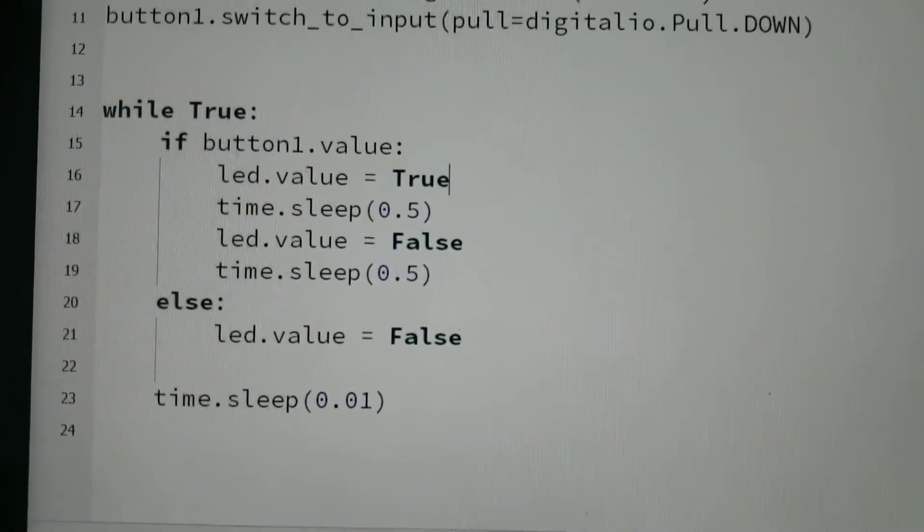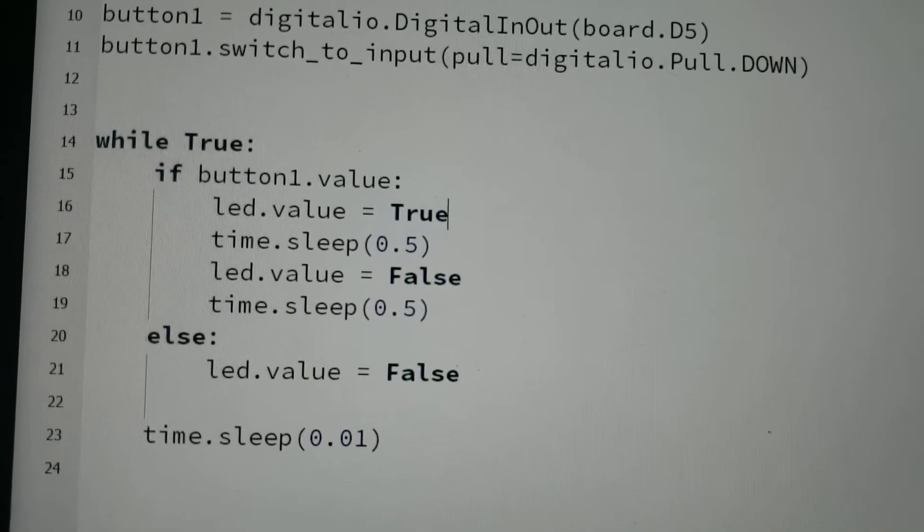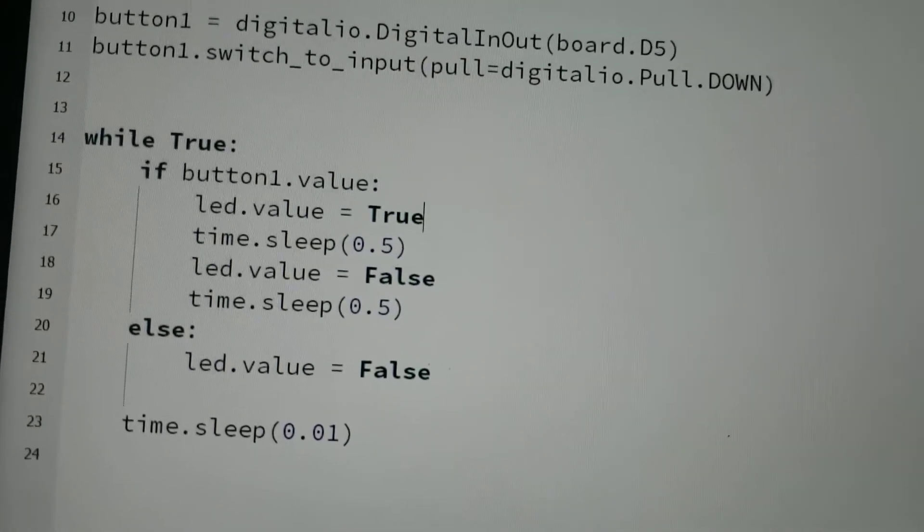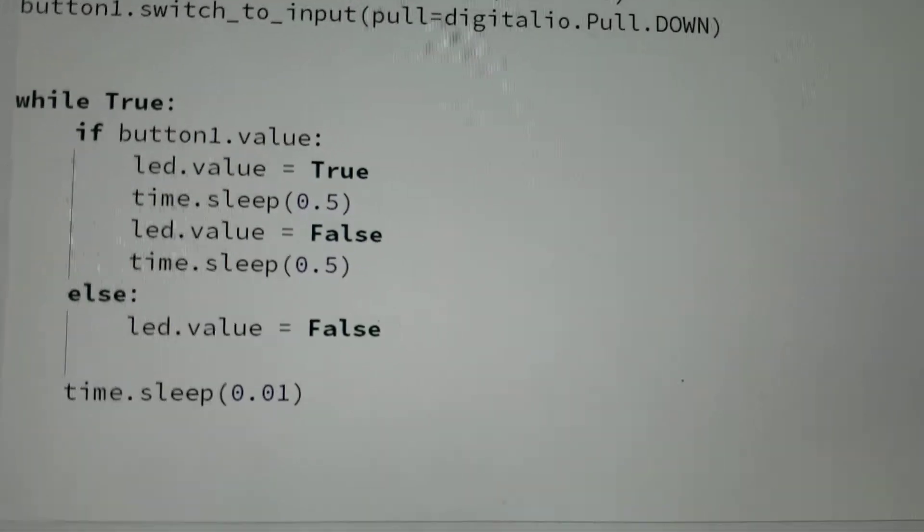It helps make things a little bit more clear and concise when I'm pressing the button. So I've got a while loop right here. I have if button1.value is true, or while it's true, the LED value will turn true,